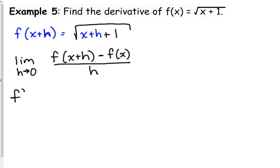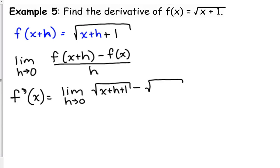So I'm actually going to use some notation here. I'm going to say f prime of x is equal to the limit as h approaches 0 of the square root of x plus h plus 1 minus f of x, which was just the square root of x plus 1, and that is all over h.